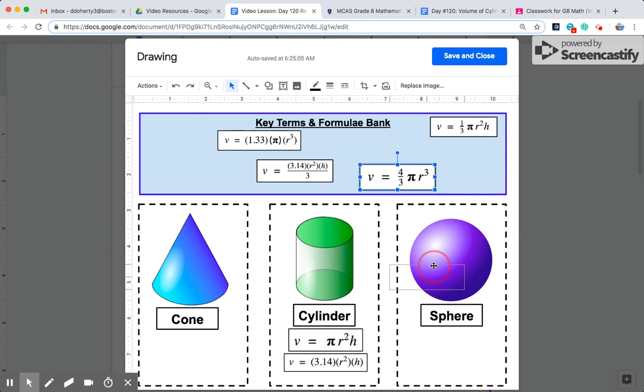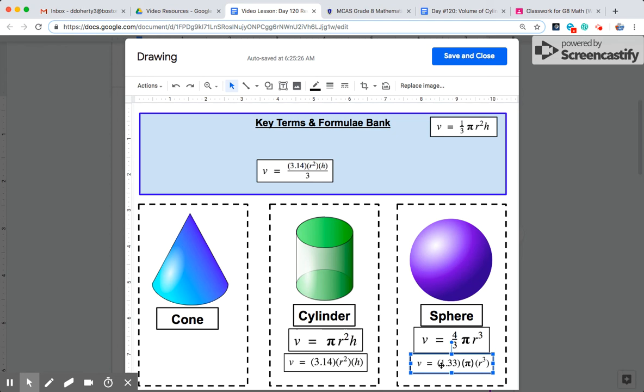The sphere equation was 4 thirds times pi times radius cubed. So I see the other one with pi radius cubed, instead of writing 4 over 3, they showed 1.33, which is again an estimate for 4 thirds.